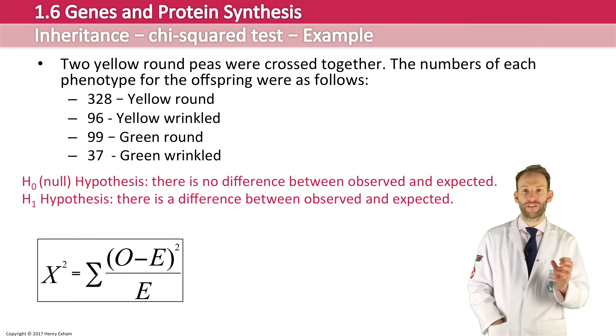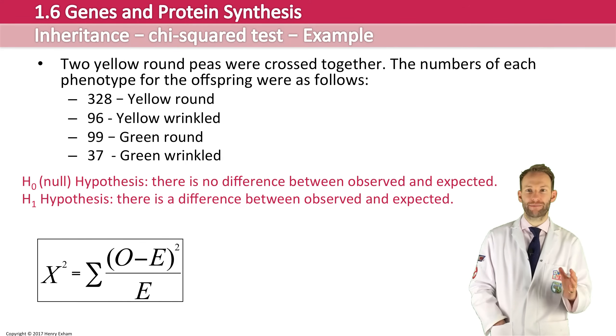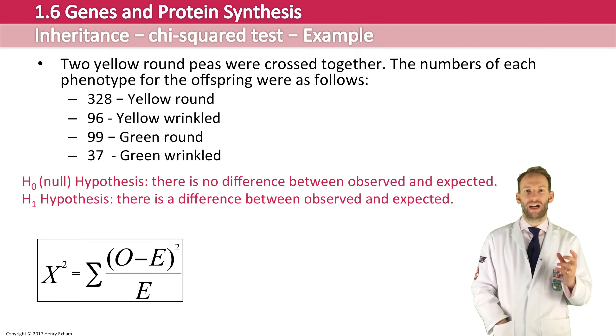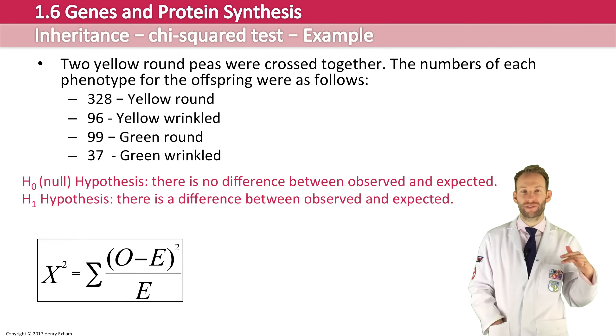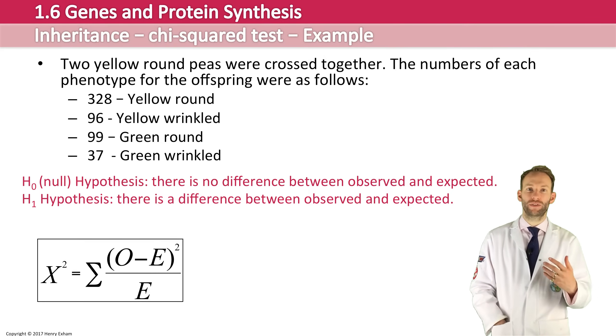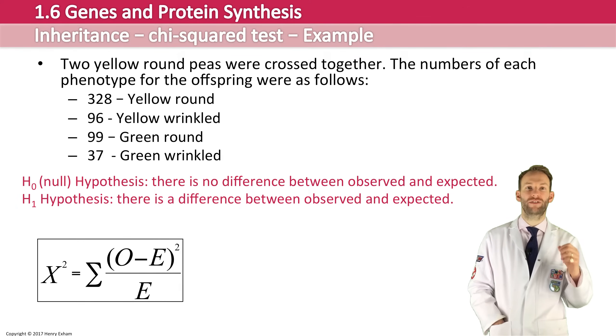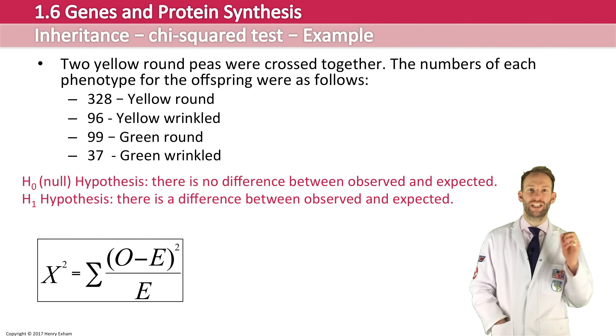So as observed gets further and further away from the expected, then the chi-squared value increases. And it's at a certain point, a sort of threshold value, which we'll talk about later on, that is when you can say that the differences are so much that it can't be just down to random chance, and that there is definitely significant difference between the observed and the expected, and therefore you need to reject the null hypothesis.